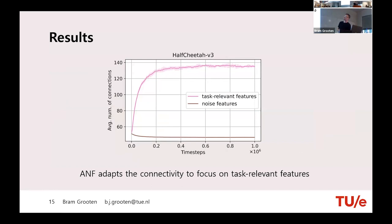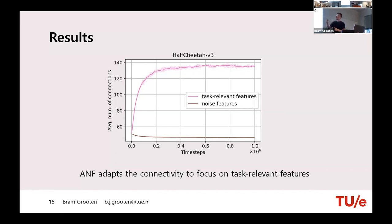This analysis shows what type of connections are being made over time. On the vertical axis we see average number of connections — pink is connections to task-relevant features and brown is connections to noise features. Right from the beginning of training, the updates cause the network to connect more to task-relevant features and less to noise features. It doesn't go all the way to zero for noise connections, but there's a big enough gap to gain the benefit.